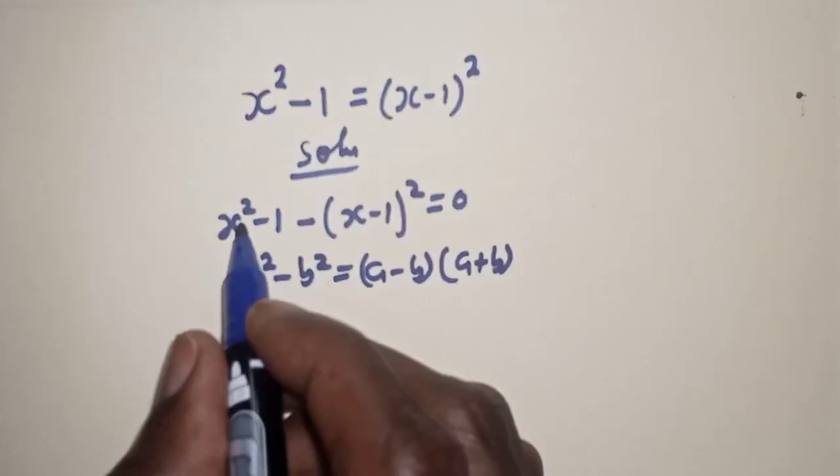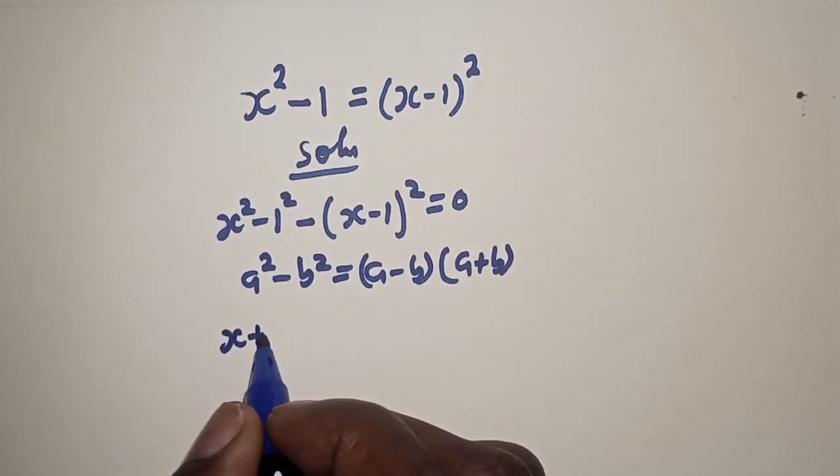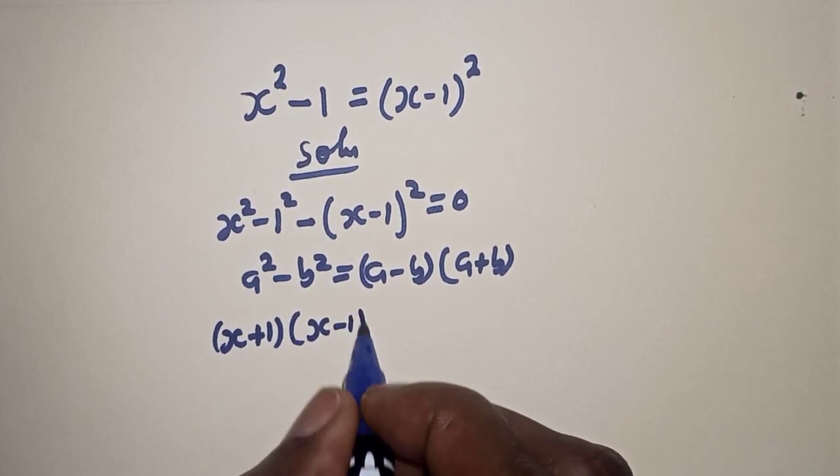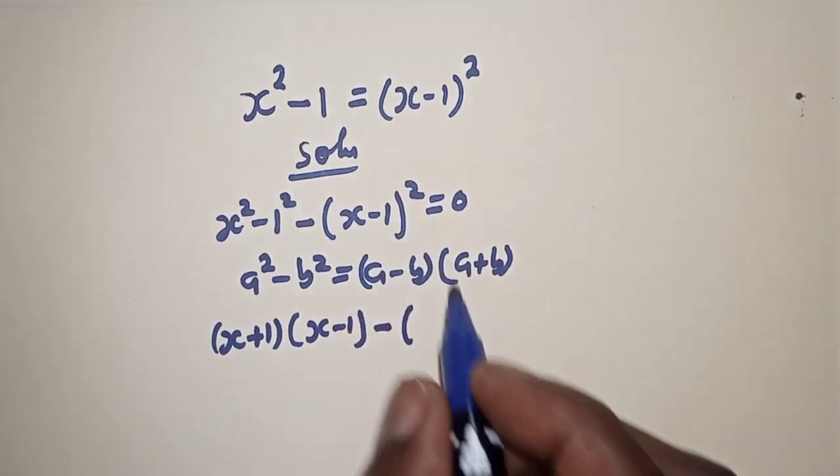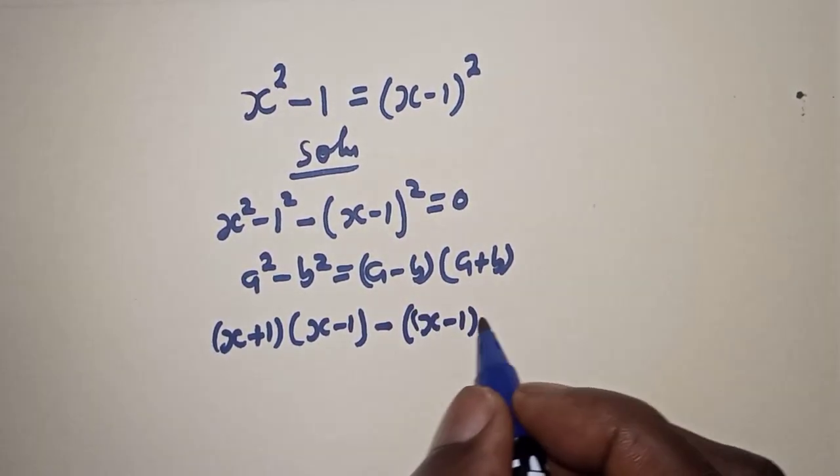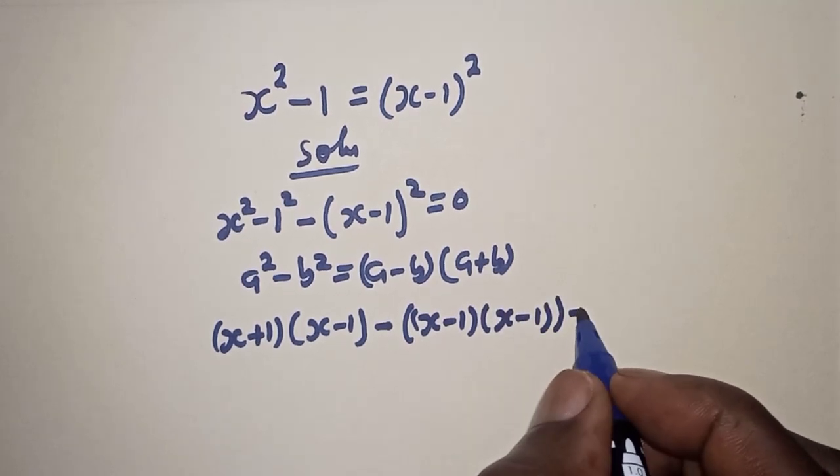Then this is also 1 squared. So, s plus 1 multiplied by s minus 1 minus this s minus 1 squared can be written as s minus 1 multiplied by s minus 1 is equal to 0.